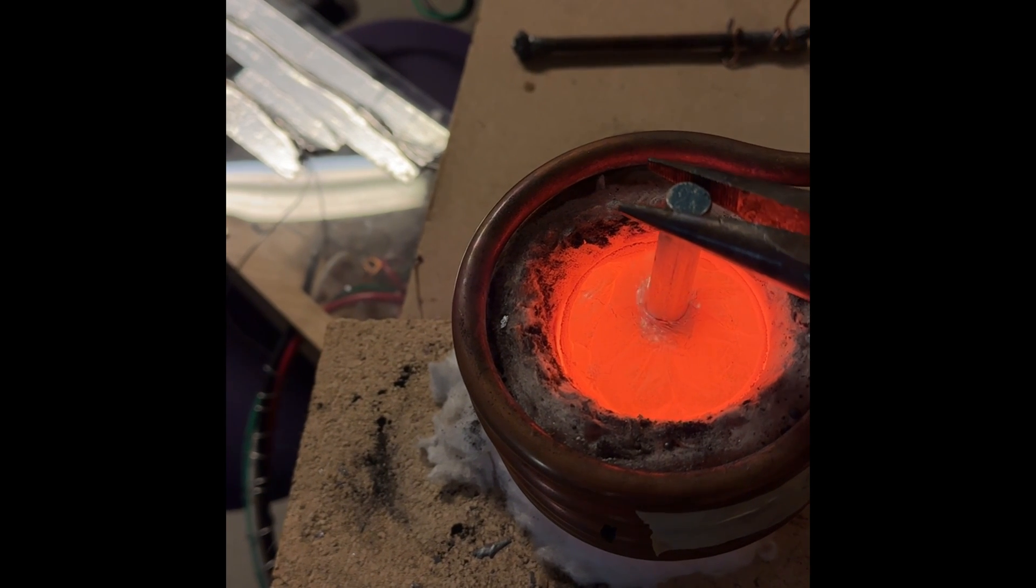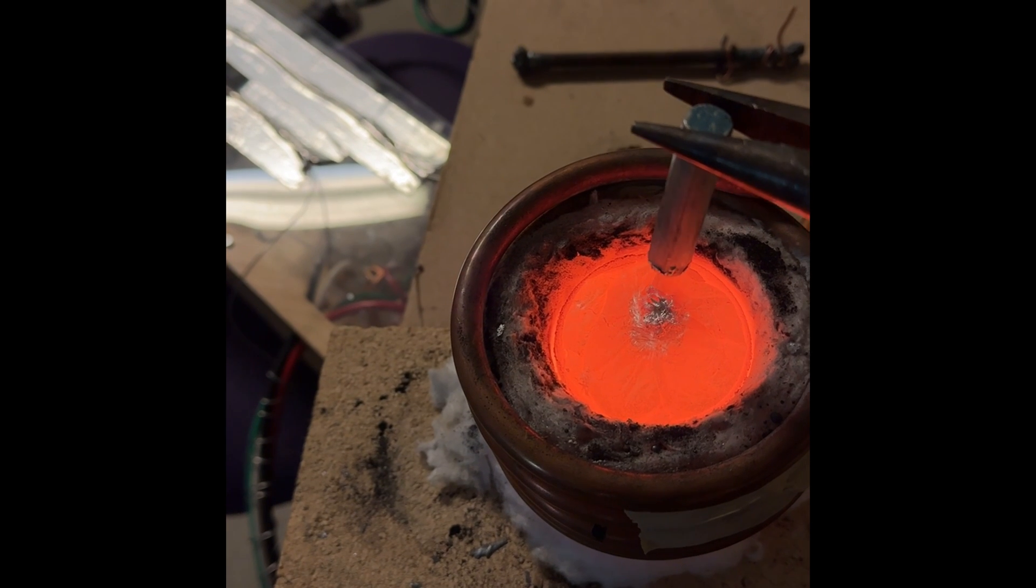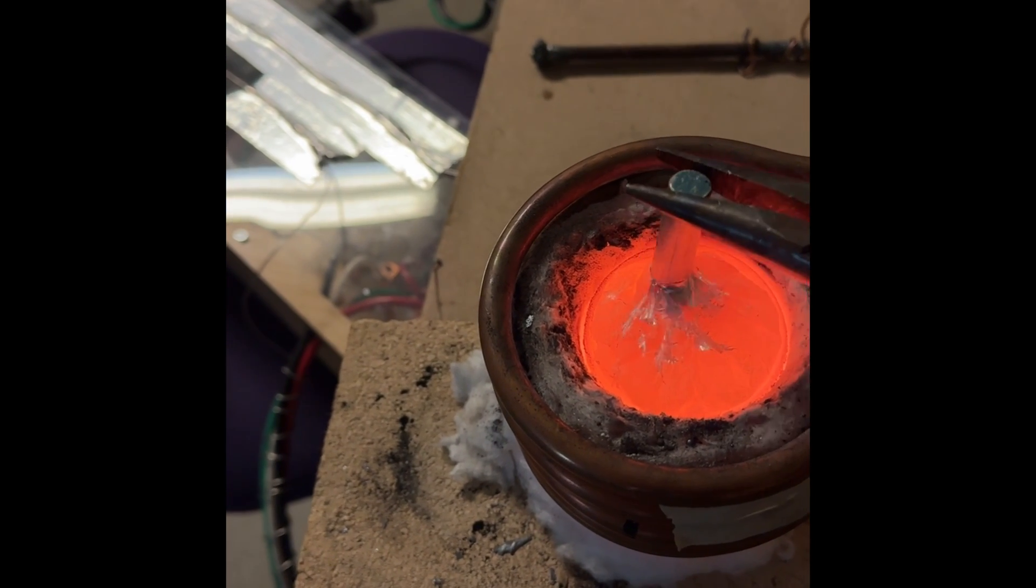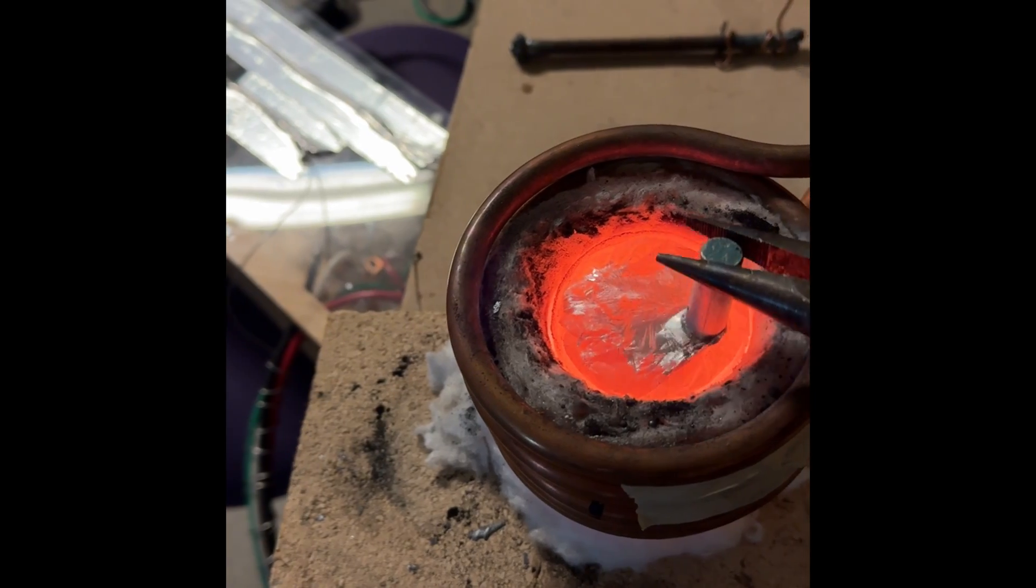Over here I have molten aluminum, same crucible, same coil, except that it's aluminum. Aluminum melts a whole lot easier than copper.